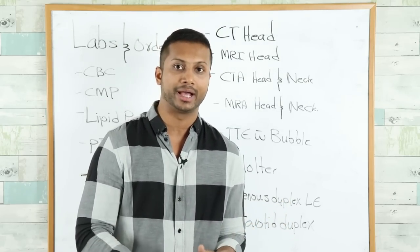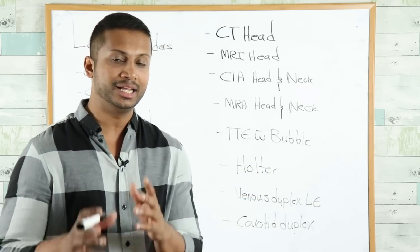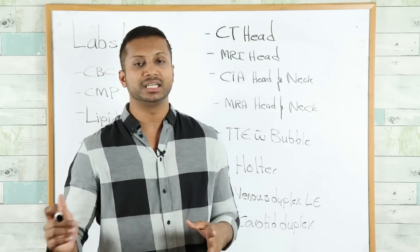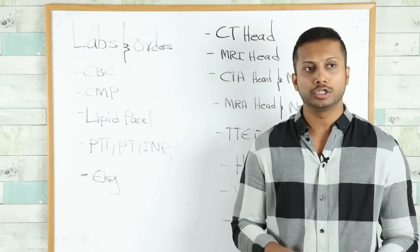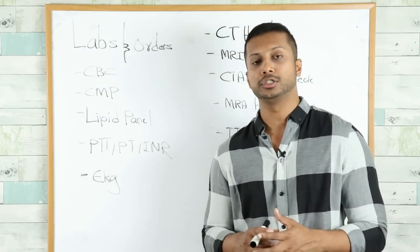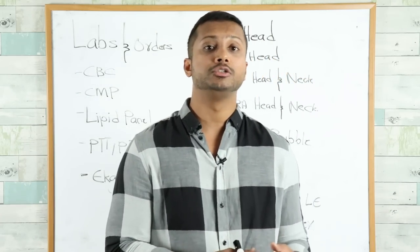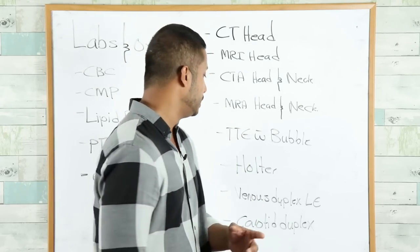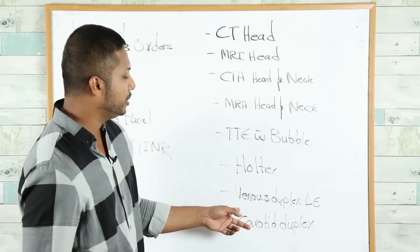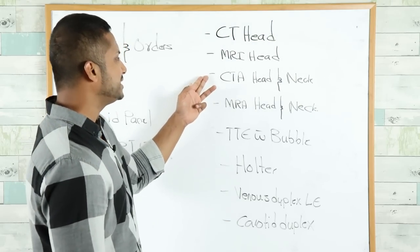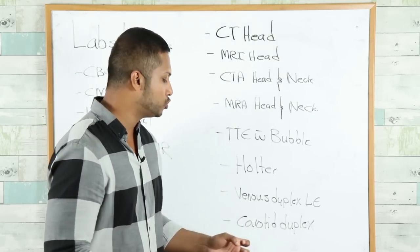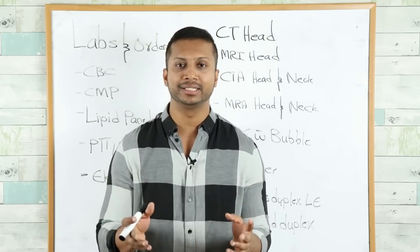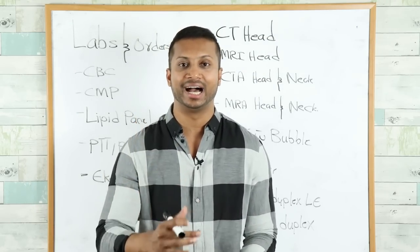If there's a DVT, then you will treat the DVT with anticoagulation appropriately. Echo with bubble study is a necessity. Then a Holter monitor: if the patient's EKG is normal and doesn't show any abnormal rhythm, you can get a 24-hour Holter monitor because you might be dealing with a case of paroxysmal atrial fibrillation or atrial flutter. And as I mentioned, venous duplex. Lastly, carotid duplex: if you do a CTA or MRA of head and neck, you do not have to do carotid duplex. This concludes the labs and orders that you're gonna place in your patient with a TIA.